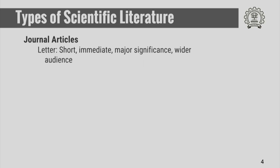This is an iterative process in which we progressively develop better and better understanding of the phenomena we are trying to examine. Now, at the forefront of scientific literature are the journal articles. Journal articles can be further classified into letters, which are short or immediate communications of major significance meant for a wider audience.